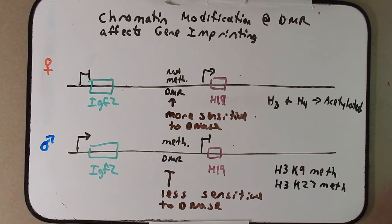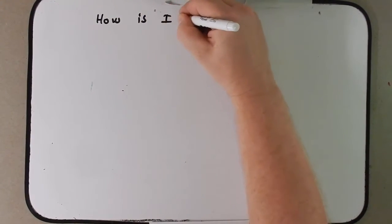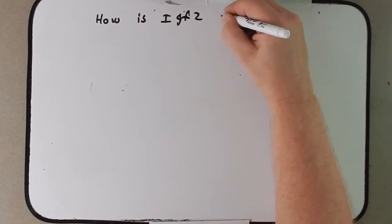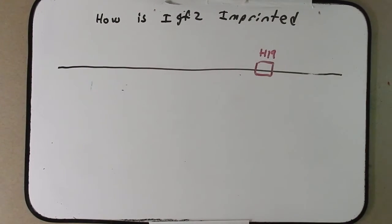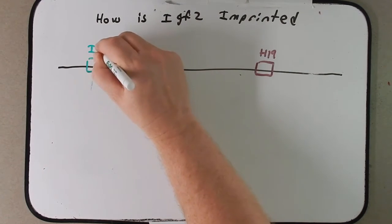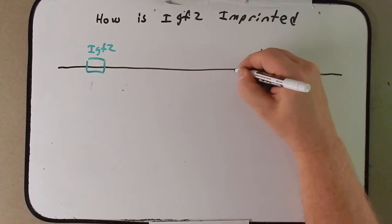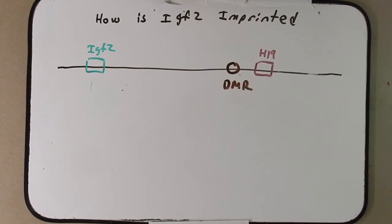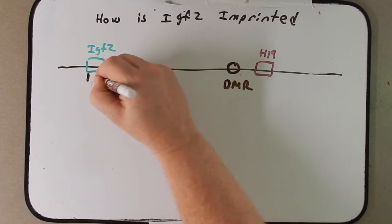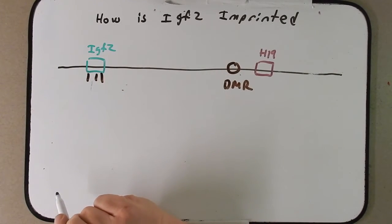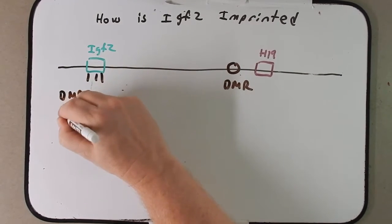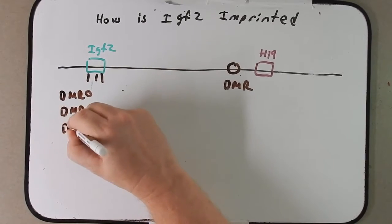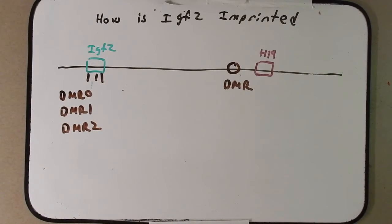And it might not surprise you to learn that we're going to talk about another DMR sites here in IGF2, a little bit different, but... So as I just said, what we're going to talk about here is how is IGF2 imprinted? So let's draw a chromatin here. And here's our H19 that we've talked about before, and IGF2 that we've also talked about before. We talked about this DMR region here, but what I haven't talked about are three DMR regions found within the gene IGF2 itself.